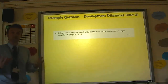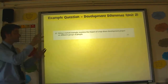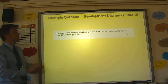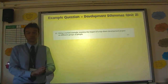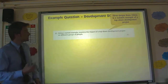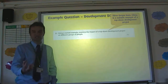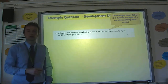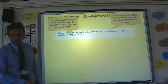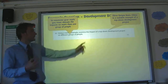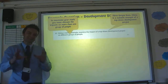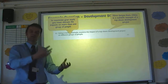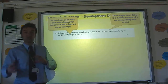This next question is from Development Dilemmas. You could also apply Three Gorges Dam to this topic: using an LIC example, examine the impact of a top-down development project on different groups of people. It's appropriate because the Three Gorges Dam is an example of a top-down development scheme — it's been decided upon by a government and the impacts have fed down onto the local population. You've got to think about impacts and, importantly, different groups of people. It isn't good enough to just talk about the impact on local farmers; you need to think of different groups and how they might be impacted in both positive and negative ways.